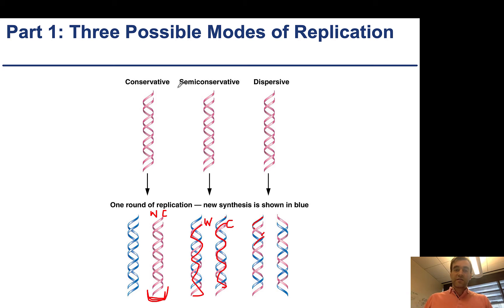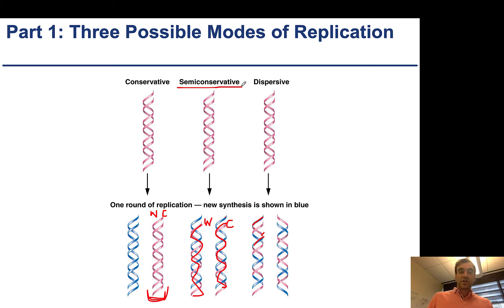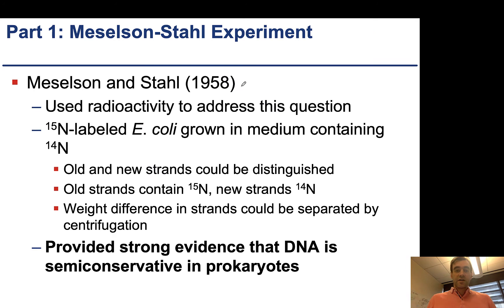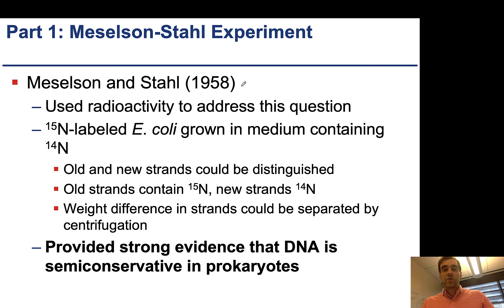The answer for how things work is semi-conservative. You need to remember that DNA replication actually occurs semi-conservatively, and we'll go over a couple of experiments that demonstrate this. The first is Meselson and Stahl, which in 1958 addressed this.